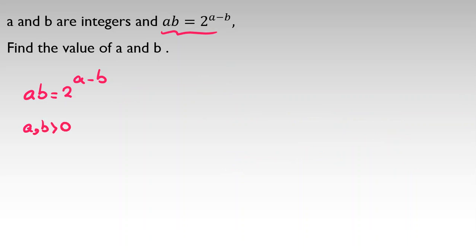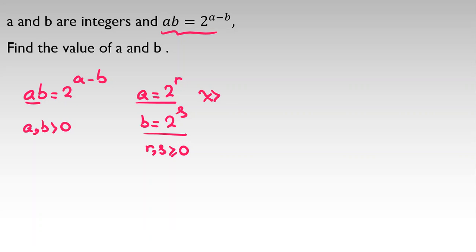Since A and B are positive and their product is 2 to the power of something, the only prime factor A and B can have is 2. For example, A equals 2 to the R and B equals 2 to the S. Because A and B are integers, R and S should be at least 0. A and B cannot be multiples of 3, 5, or any other prime.